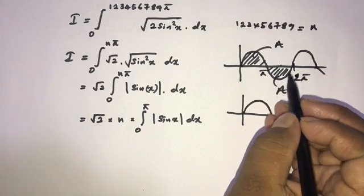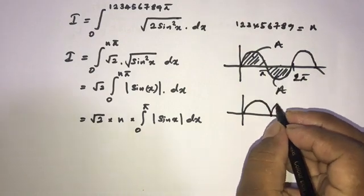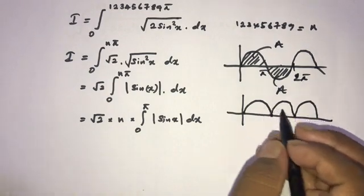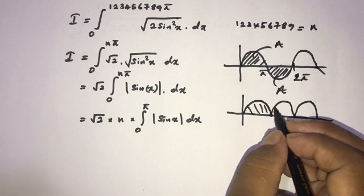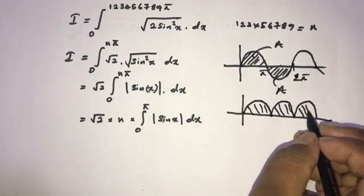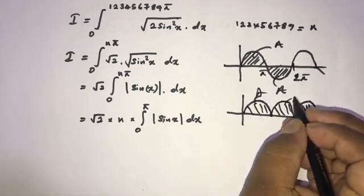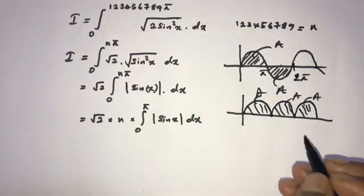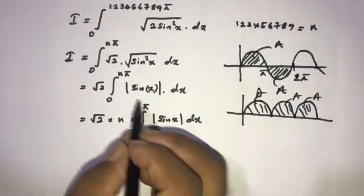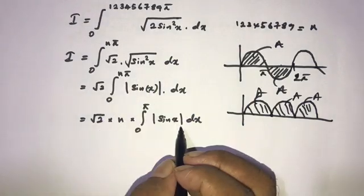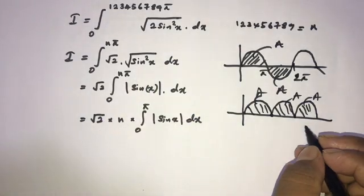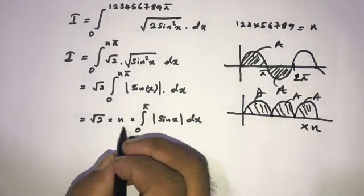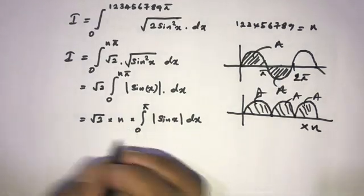In this area, we know that if we take this area as A, then this is A, and this is also A — they are all equal. So our integral from 0 to n times 5 repeats n times, that's why we write n here.